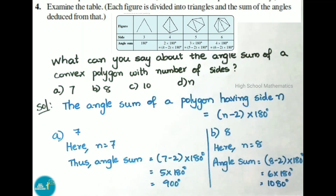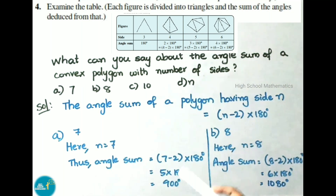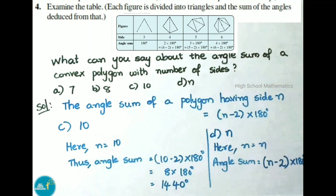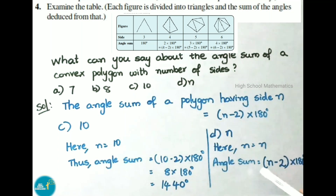For question A, N = 7: angle sum = (7 − 2) × 180 = 5 × 180 = 900 degrees. For question B, N = 8: angle sum = (8 − 2) × 180 = 6 × 180 = 1080 degrees. For question C, N = 10: angle sum = (10 − 2) × 180 = 8 × 180 = 1440 degrees. For question D, N = N: angle sum = (N − 2) × 180 degrees.